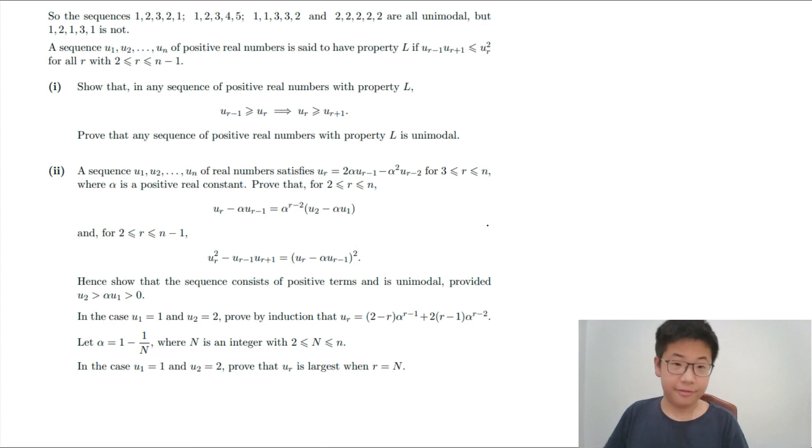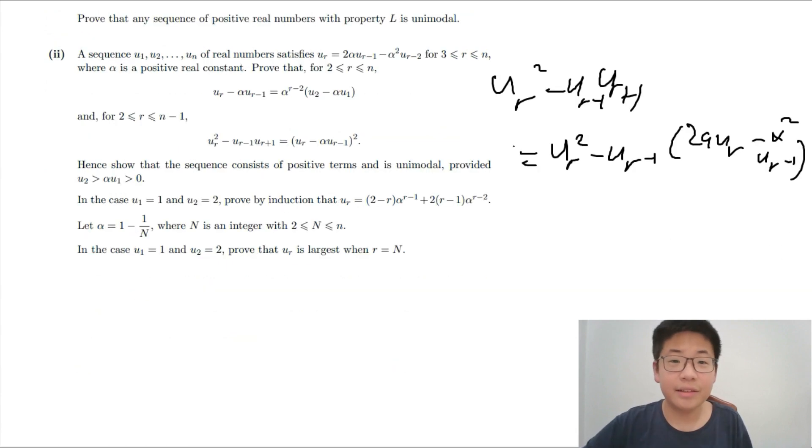We have UR squared minus UR minus 1 times UR plus 1 equals to UR squared minus UR minus 1, 2A UR minus alpha squared UR minus 1. And then, you have UR minus alpha UR minus 1 squared by the recursion formula for the Horadam sequence.